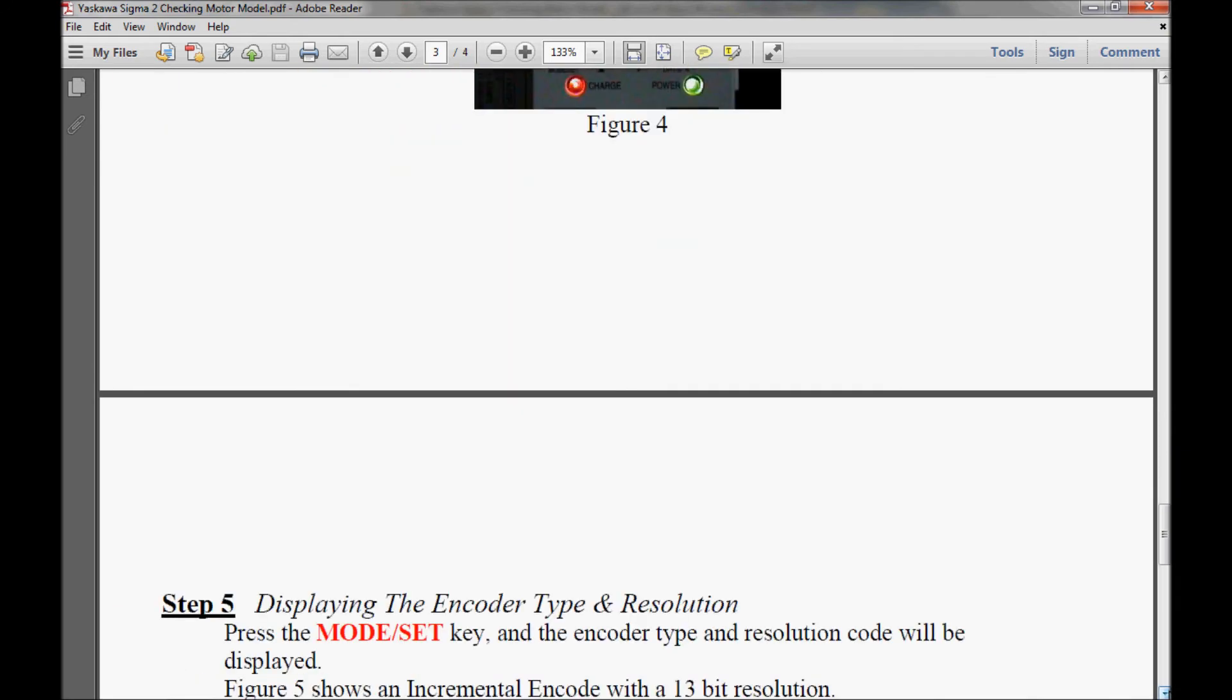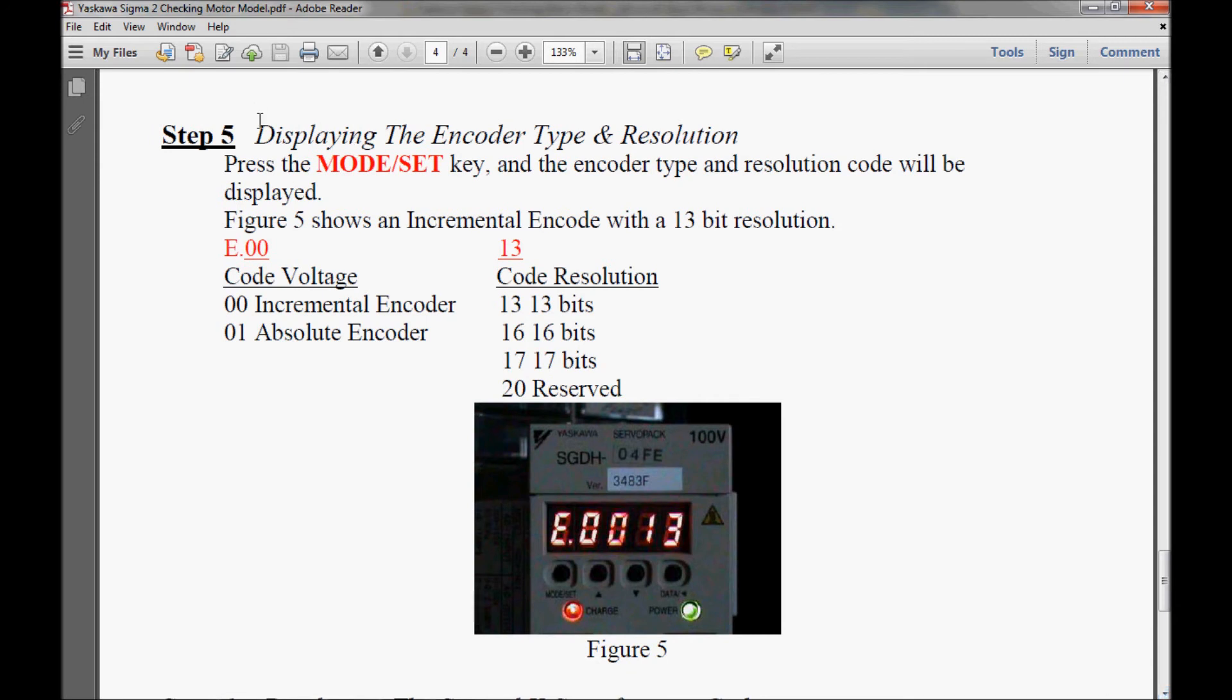And here in step 5, I am displaying the encoder type, also the resolution. It's similar to step 3, where you have E.00. The 0, 0 would be the code for the type of encoder it is. And in this case, it is an incremental encoder. And then the 1, 3 is the code resolution, which is a 13-bit encoder.